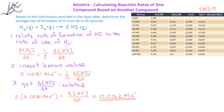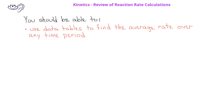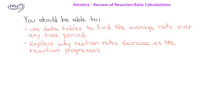After watching this video, you should be able to use data tables to find the average rate of consumption or formation of a product or reactant over any given time period. You should also be able to explain why the rate decreases as the reaction continues. Finally, you should be able to calculate the rate of change of one compound if the rate of change of another compound is known.